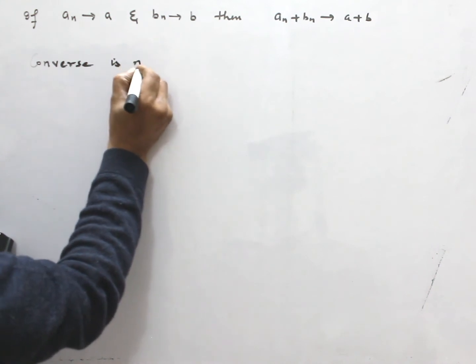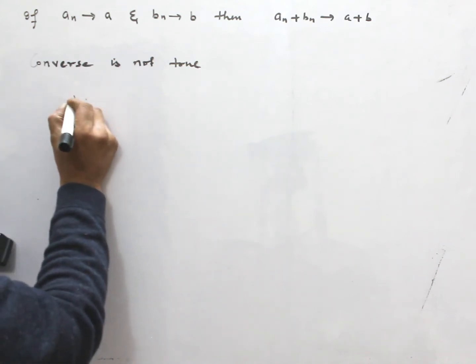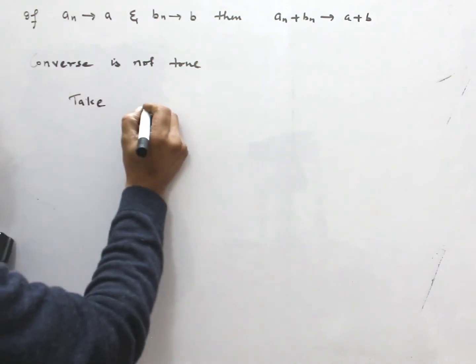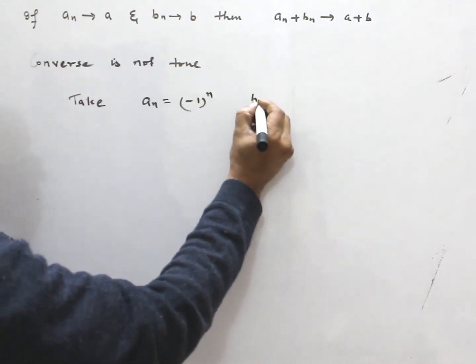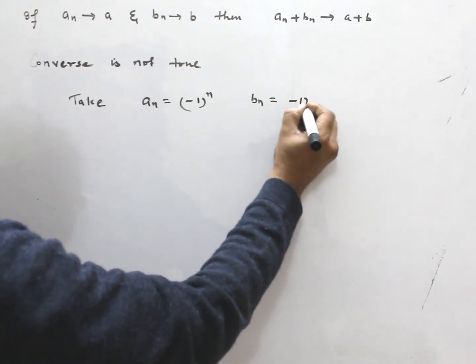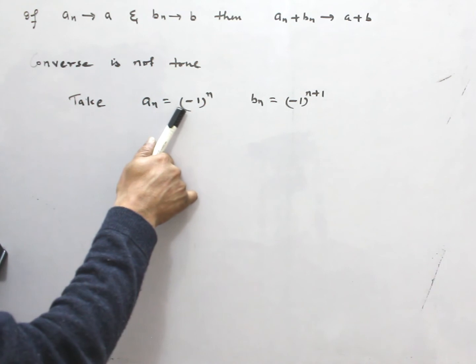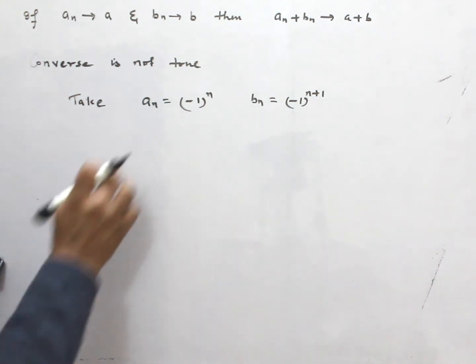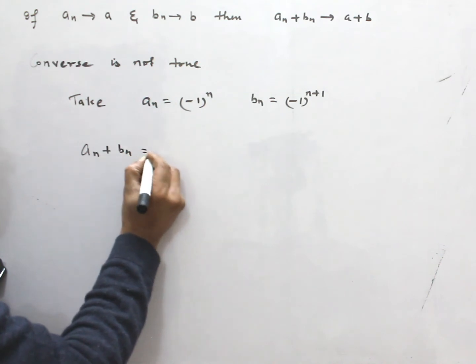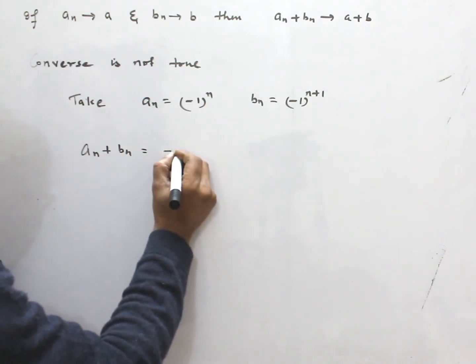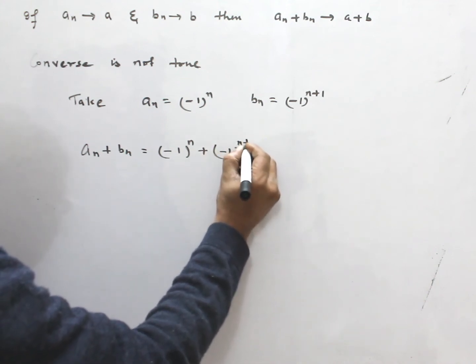Let me take An = (-1)^n and Bn = (-1)^(n+1). Now, see, this sequence is oscillating. This also oscillating. Both are not convergent. But, see...